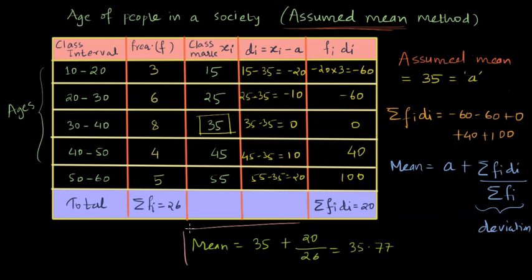Let me just box it real nice like this. And this is how we can find the mean by assumed mean method.